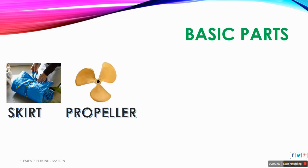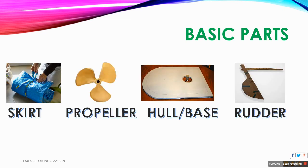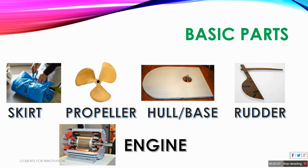Now we will see some of the basic parts involved in assembling the hovercraft: the skirt, a propeller, hull or the base, a rudder that is used to give direction, an engine, and we will be more concentrating on the electrical components — we also have a motor here.